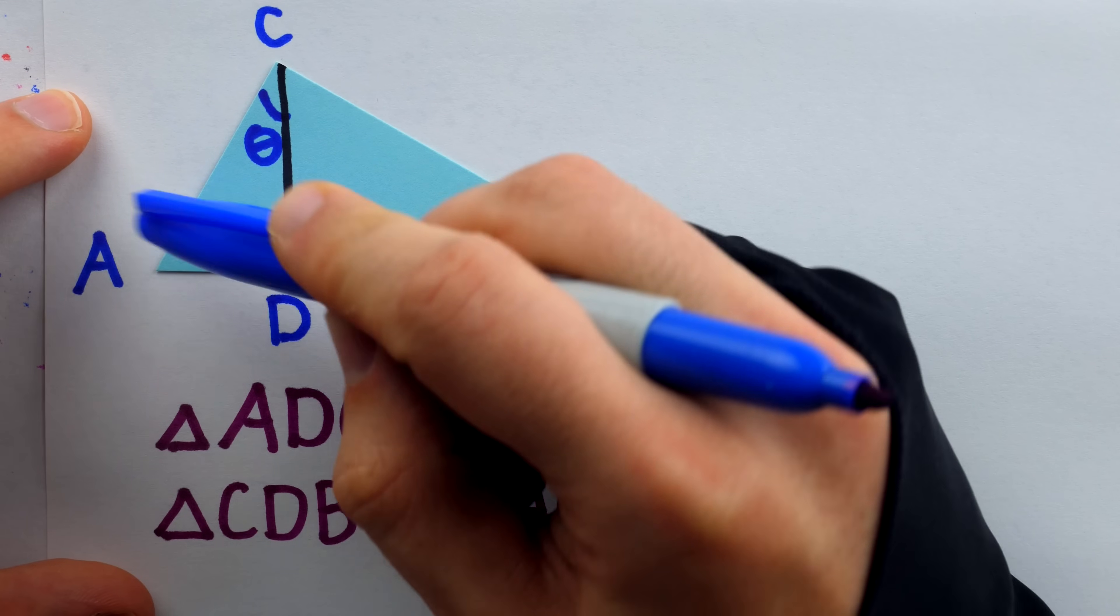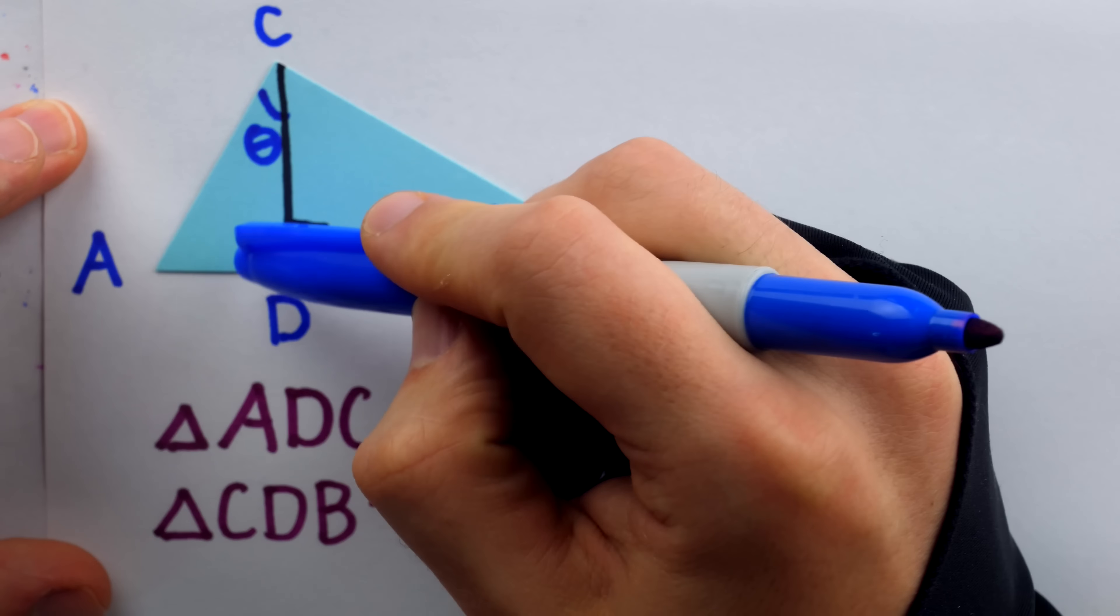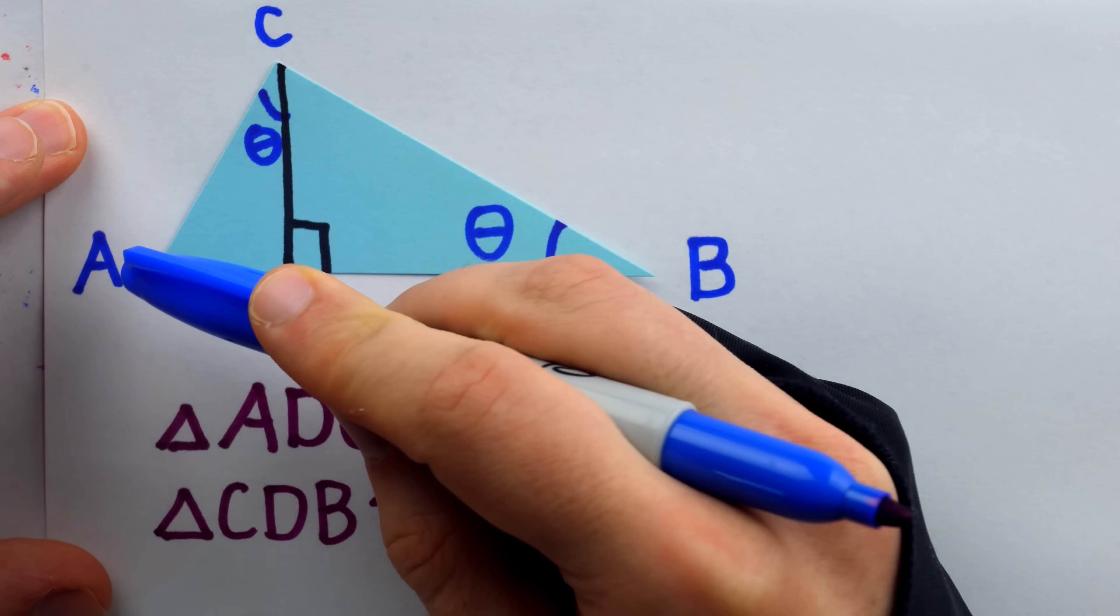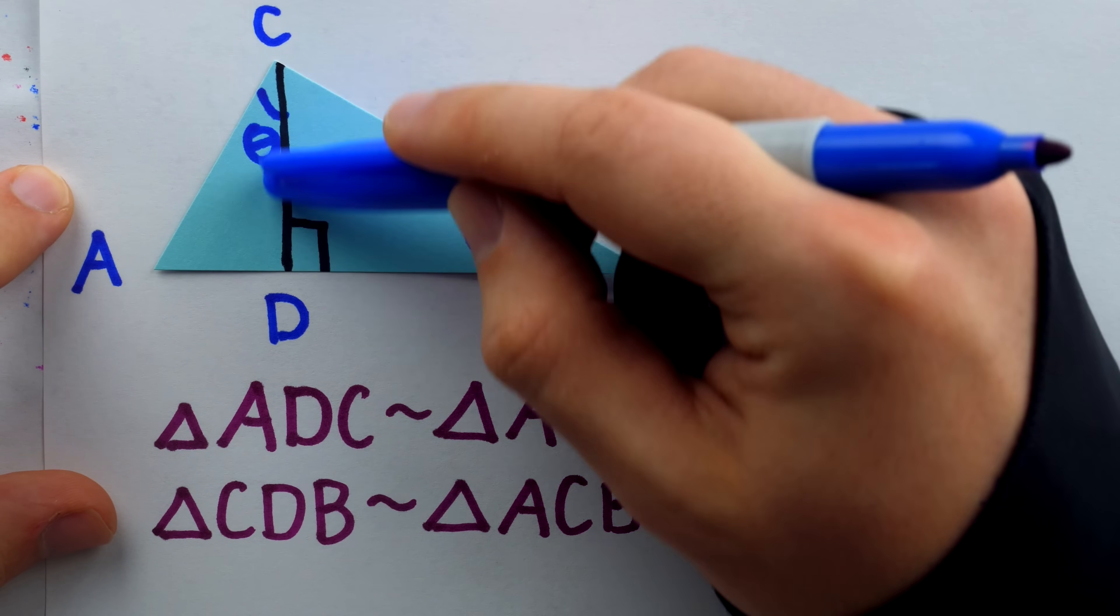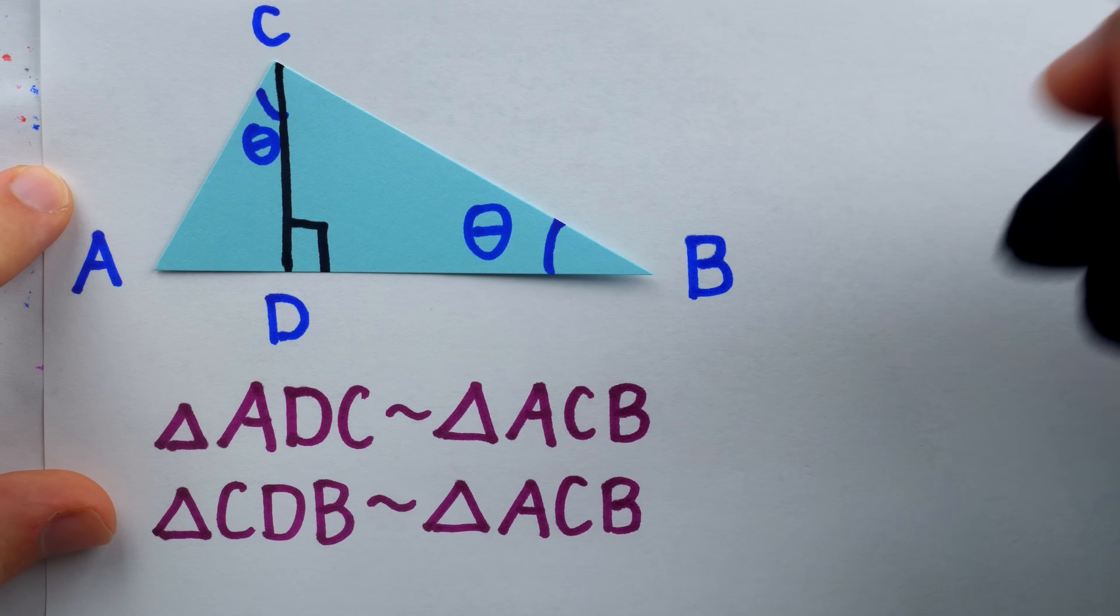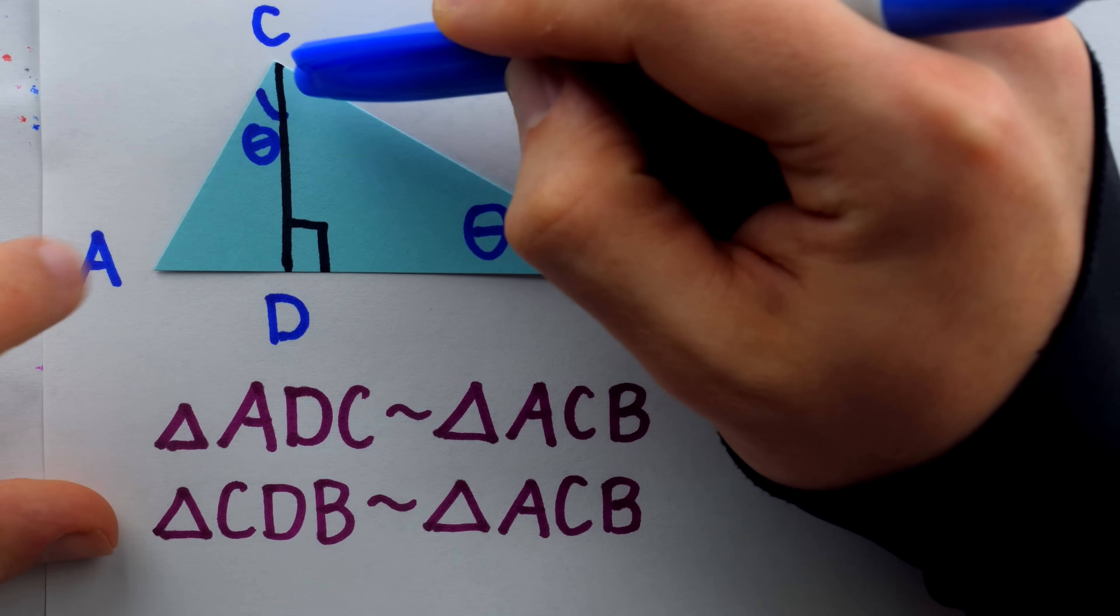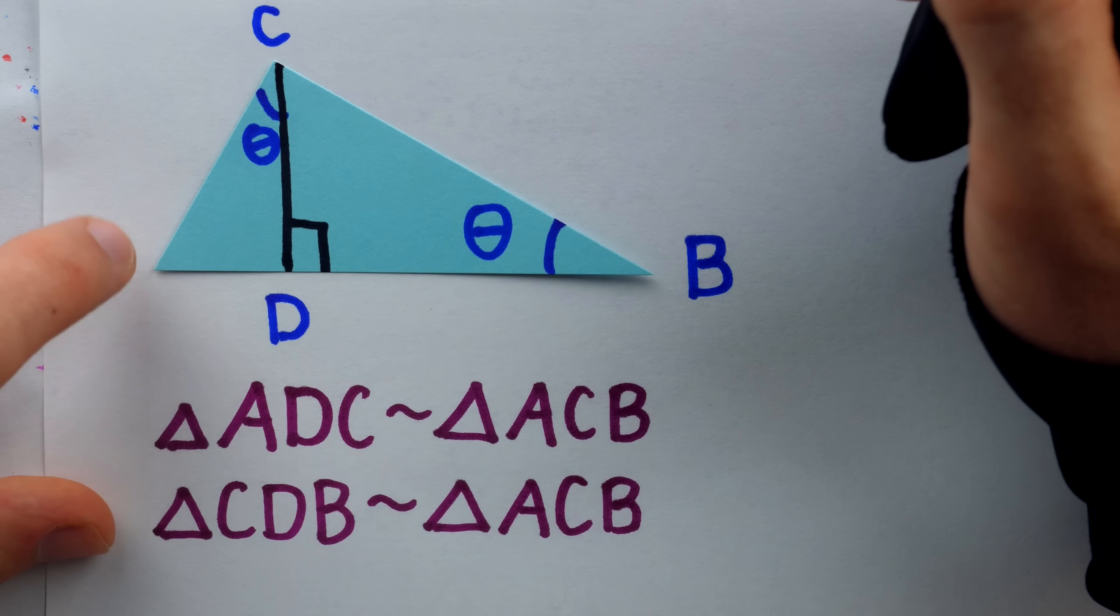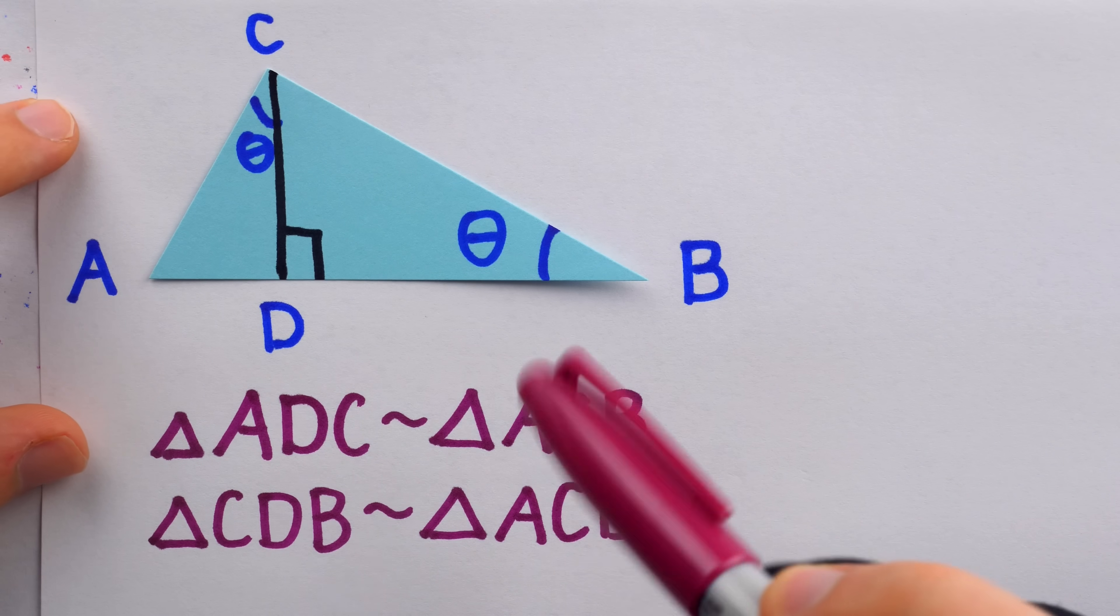Again, that's because 90, plus A, plus theta, is 180 in the big triangle. In the small triangle, we have 90, plus A, so it must be plus theta. And then, going back to this right triangle, it must actually have all the same angles. 90, plus theta, plus, well, this must be A, because we know that angle A combines with 90 and theta to make 180.